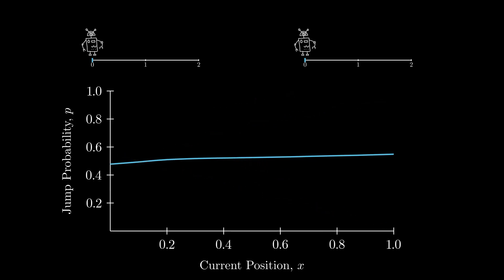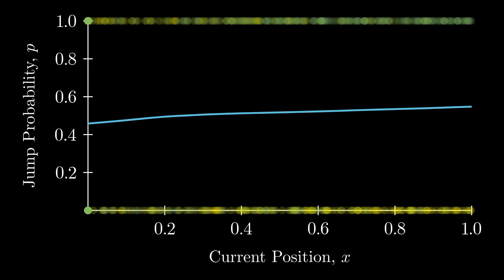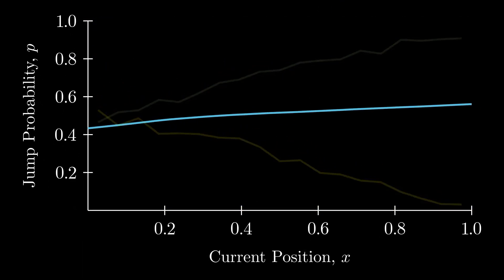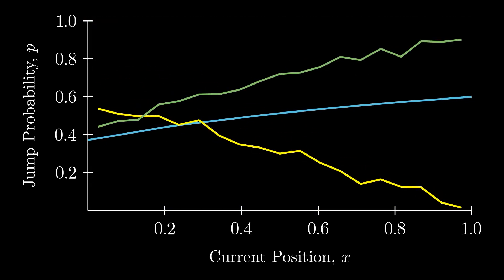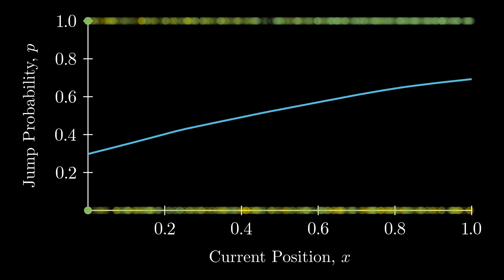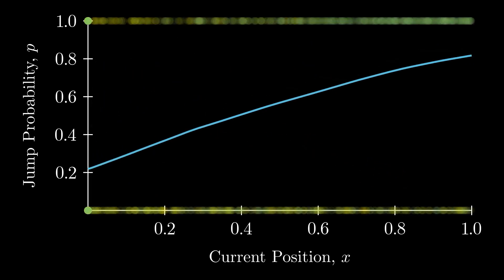When we update our neural network with this data, it will slightly nudge our strategy so that we jump less early on and more later. Now we compete robots with this new strategy and repeat this update procedure. The specific algorithm used is called policy gradient. If you want a more in-depth explanation of the algorithm, I've added some references in the description.